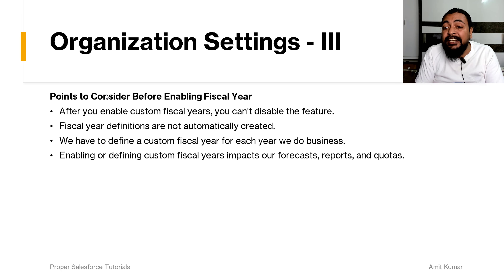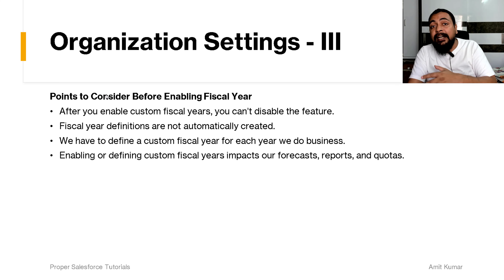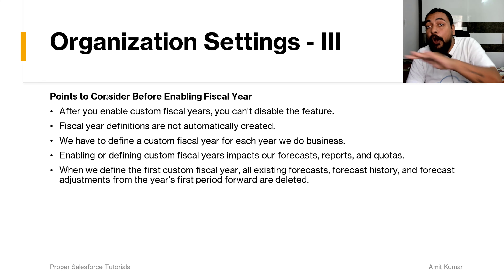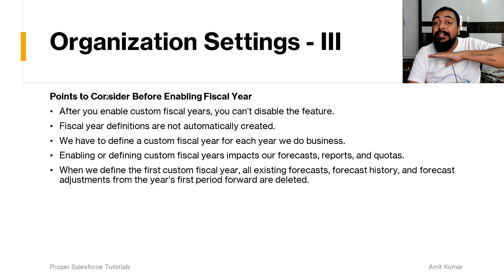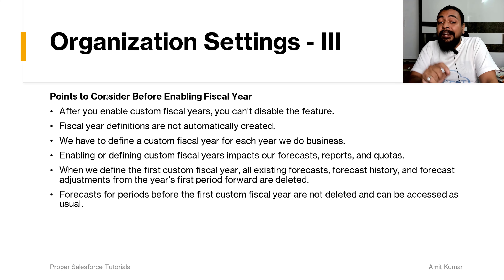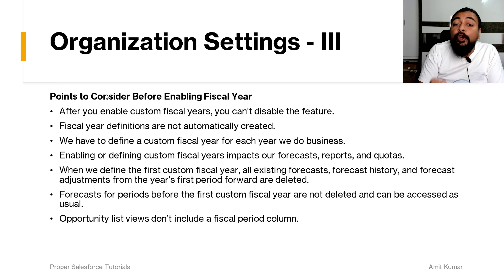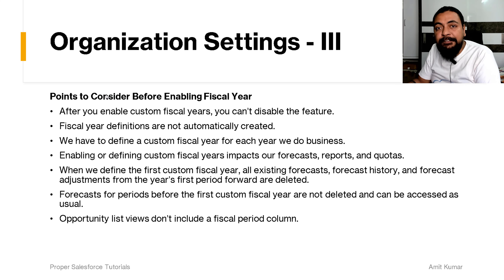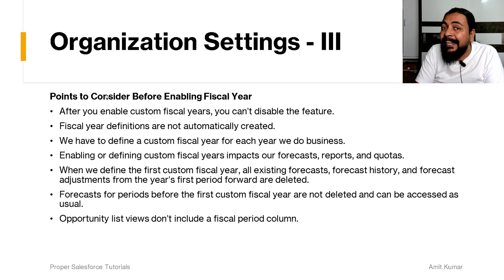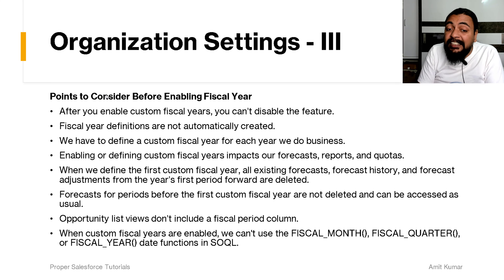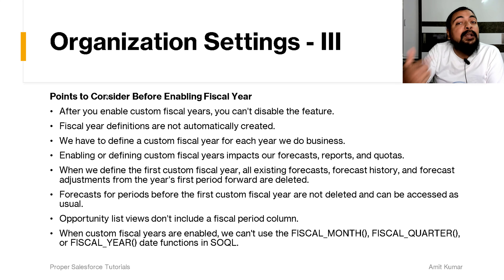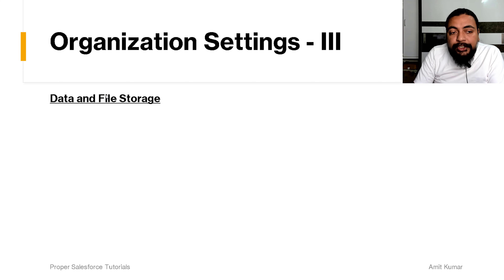You have to define a custom fiscal year for each year you do business. Enabling or defining custom fiscal years impacts your forecasts, reports, and quotas. When you define the first custom fiscal year, all existing forecasts, forecast histories, and forecast adjustments from the year's first period forward are deleted, but forecasts before the first custom fiscal year are not deleted. Opportunity list views won't include a fiscal period column, and you cannot use fiscal month, fiscal quarter, or fiscal year date functions in SOQL queries.